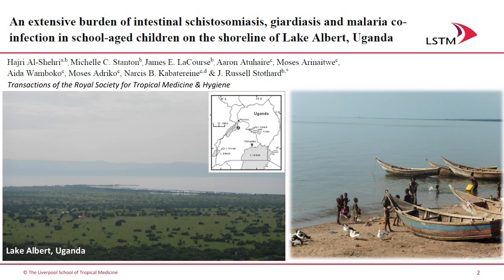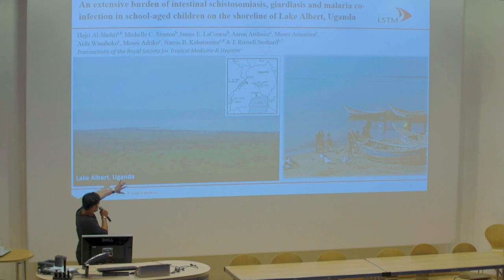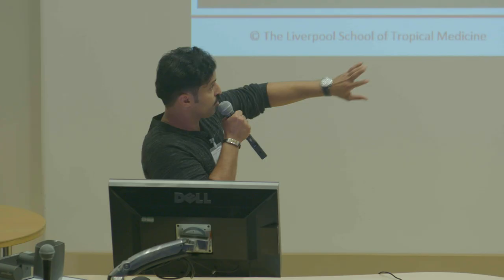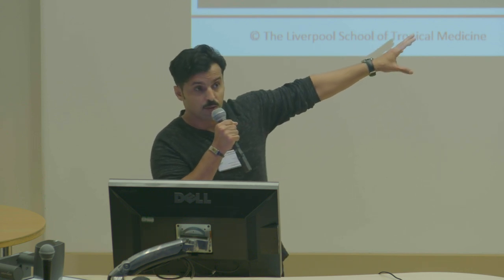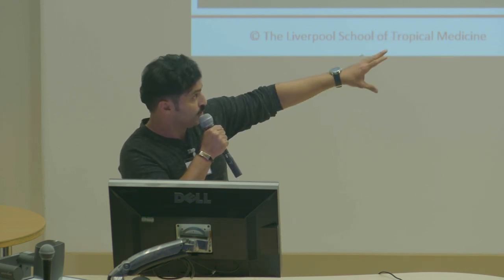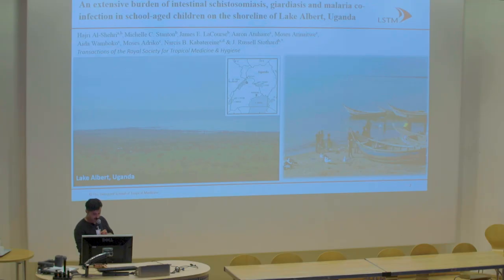We have already published these papers, highlighting intestinal schistosomiasis prevalence in the shorelines, as well as malaria, published in Transactions. And you can see here the shorelines — when you get closer to the shorelines, you can see most of the community living close by, and kids playing on a daily basis where they can catch schistosomiasis.